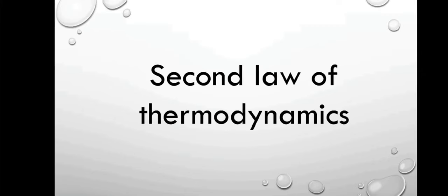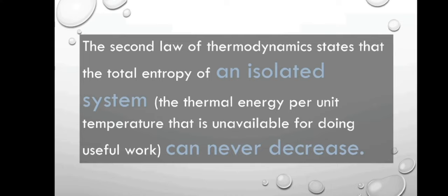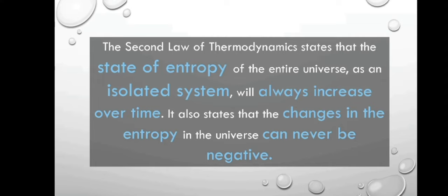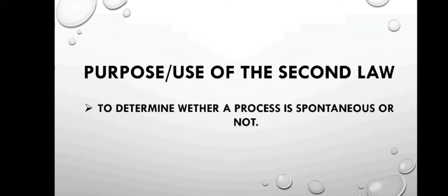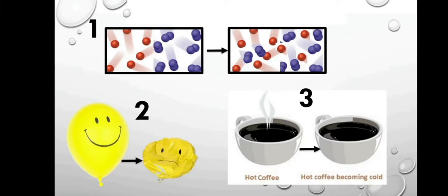Now let's talk about the second law of thermodynamics. The second law states that the total entropy of an isolated system can never decrease. An isolated system is the thermal energy per unit temperature unavailable for doing useful work. The second law also states that the entropy of the entire universe as an isolated system will always increase over time, and changes in entropy in the universe can never be negative. The purpose of the second law is to determine whether a process is spontaneous or not.